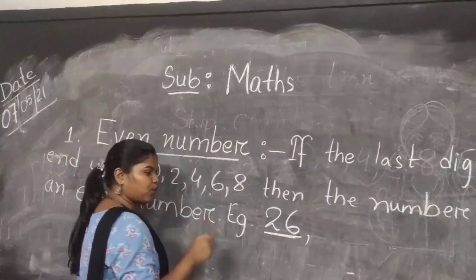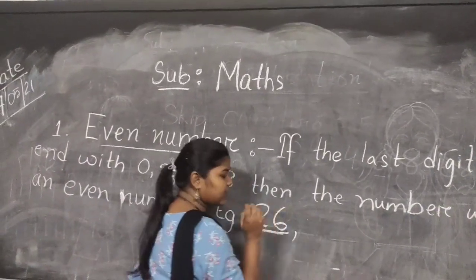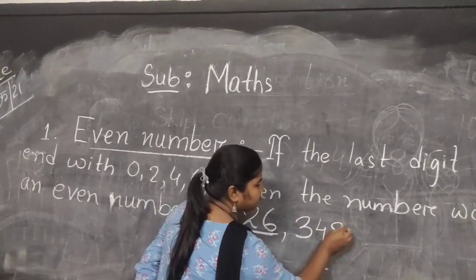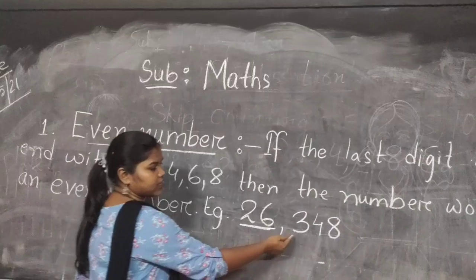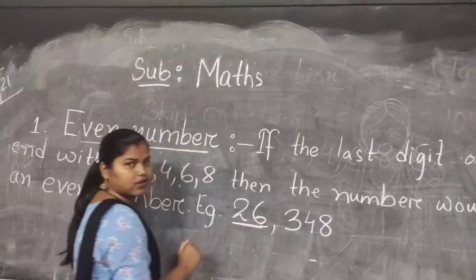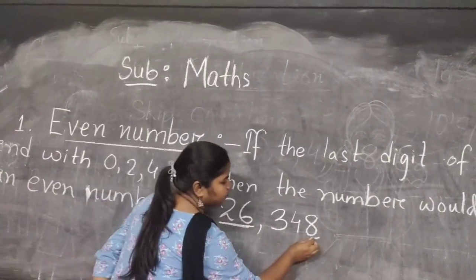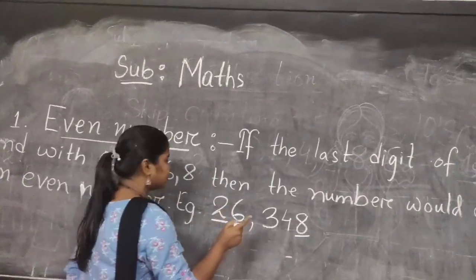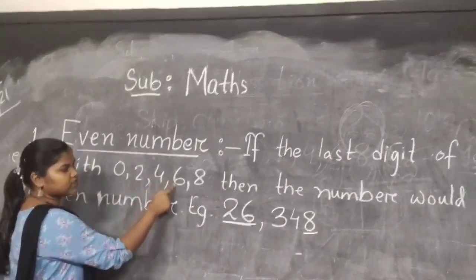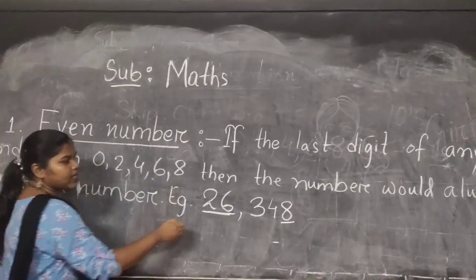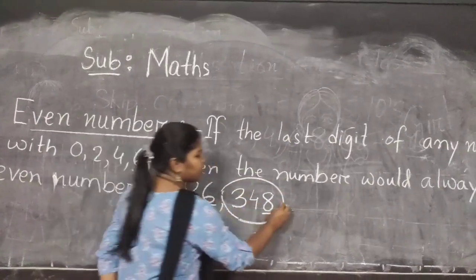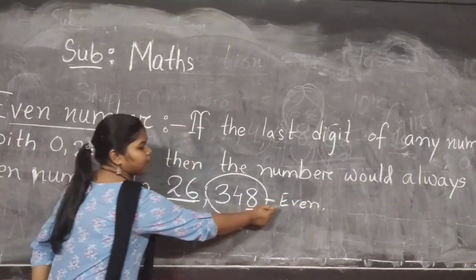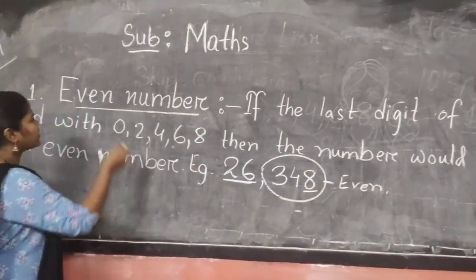I am going to show you another example. We will take a three visit number. Okay, 348. You see 348 — what is the last visit? You have to check what is the last visit. If the last visit is 0, 2, 4, 6, 8 then the number is an event number. Now, you understood what is an event number?